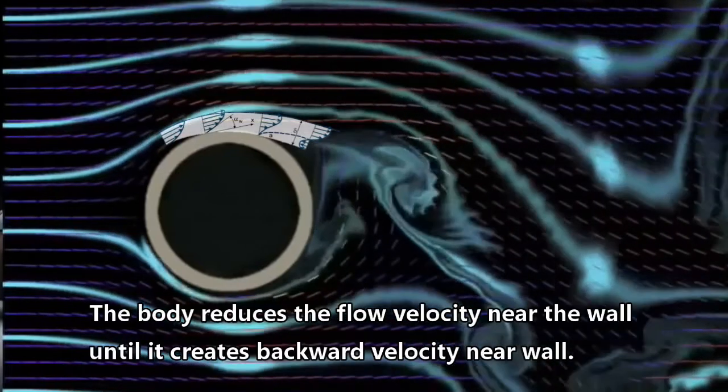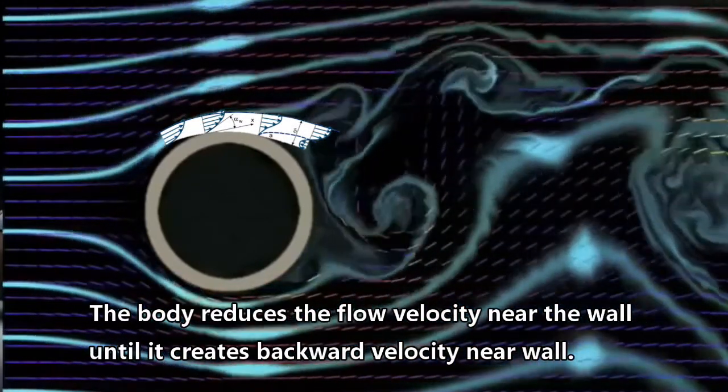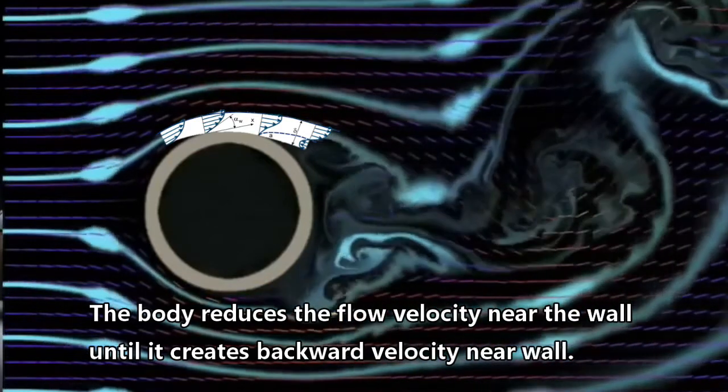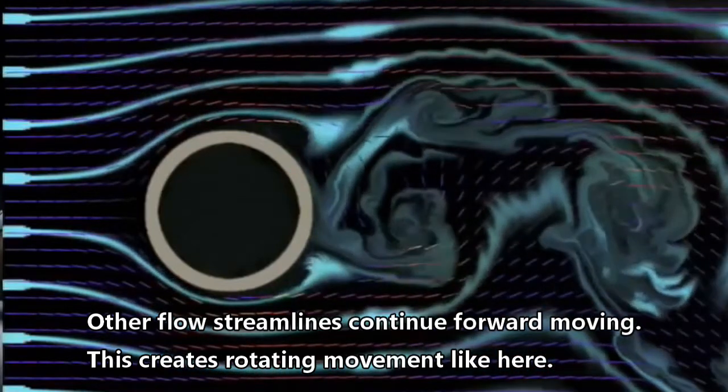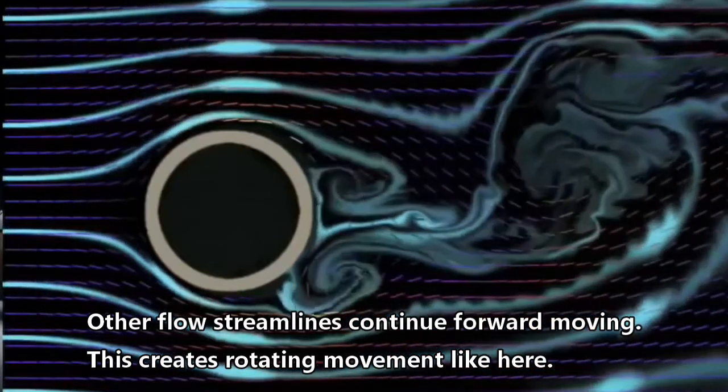The body reduces the flow velocity near the wall until it creates backward velocity near the wall region. Other flow streamlines continue forward moving, which creates rotating movements.